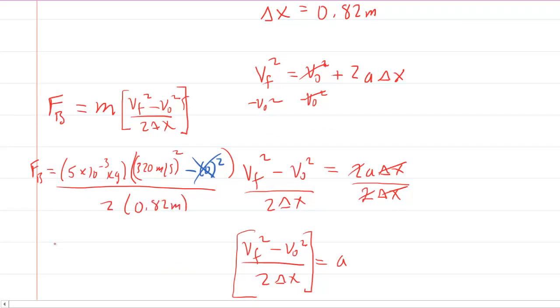And at this point pick up your calculator and punch this information in. And again don't forget to square that final velocity. And when you do this you should end up with a force on the bullet of about 312 newtons. So this would be the correct answer to the question.